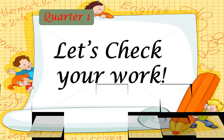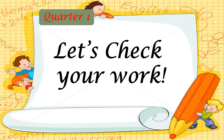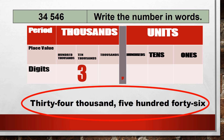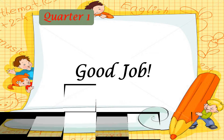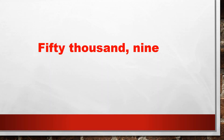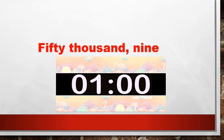Let's check your work. Write this number in words: we can simply write 34,546 as thirty-four thousand, five hundred forty-six. Did you get the correct answer? Good job! Let's move on to writing this number in symbol: 50,009.